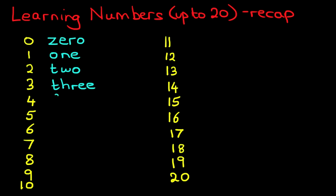The next one is 4. F-O-U-R, four. The next one is 5. F-I-V-E, five. The next one is 6. S-I-X, six. The next one is 7. S-E-V-E-N, seven.